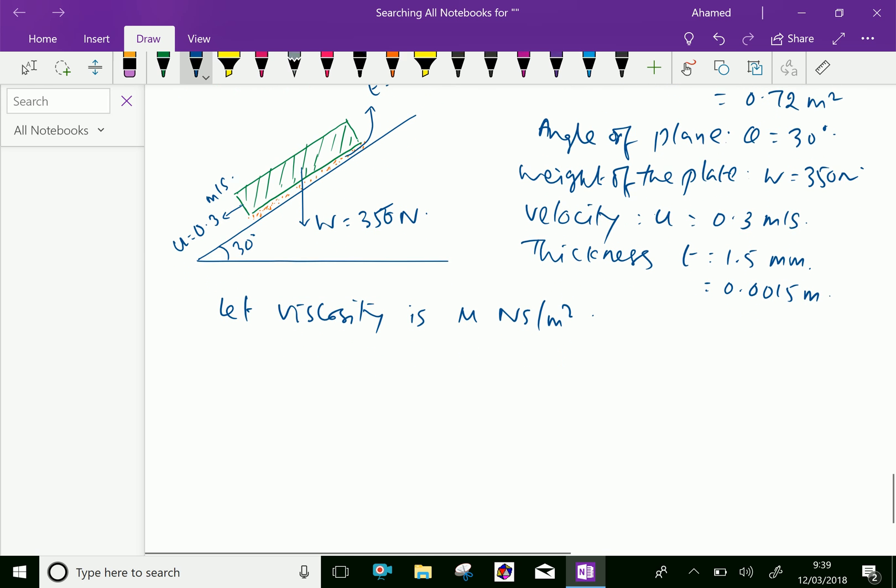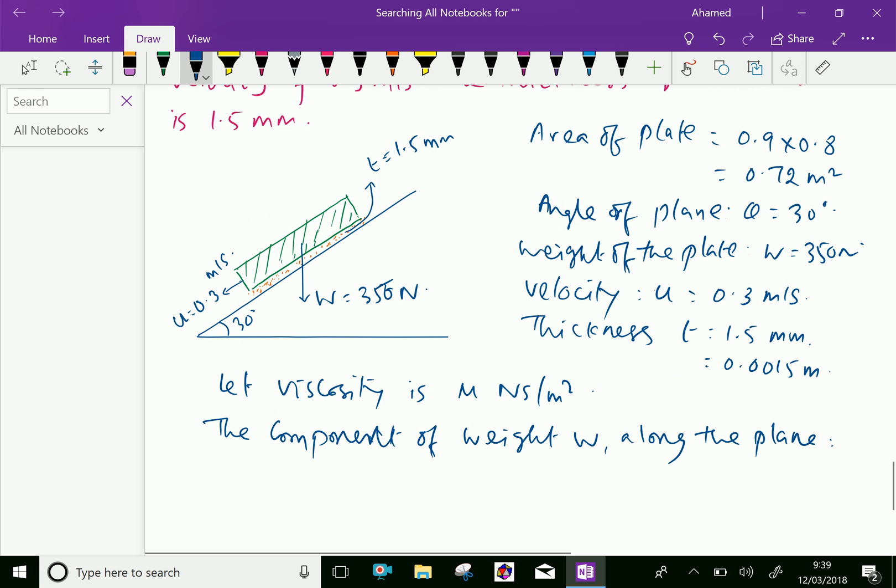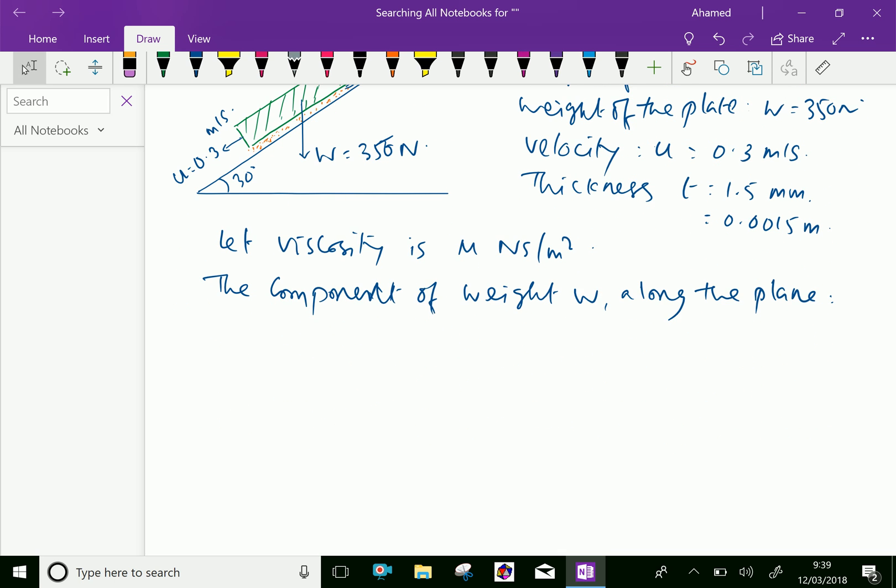The component of weight W along the inclined plane is W cos 60, because theta is 30 degrees given, so 90 minus 30 is 60. W cos 60, that is 350 into cos 60, equals 350 multiplied by cos 60 equals 175 Newton.